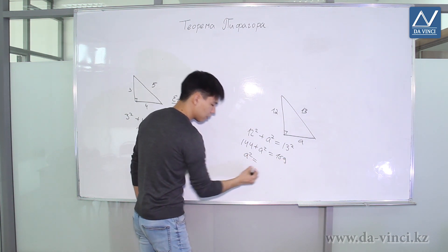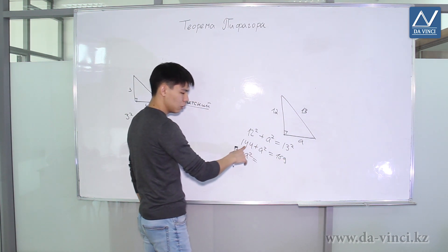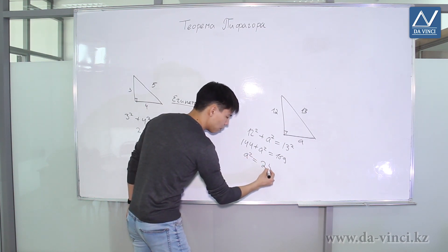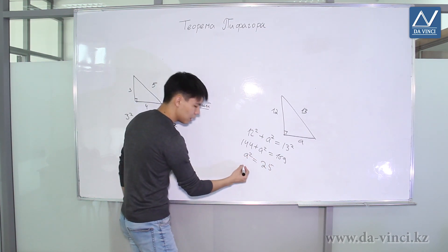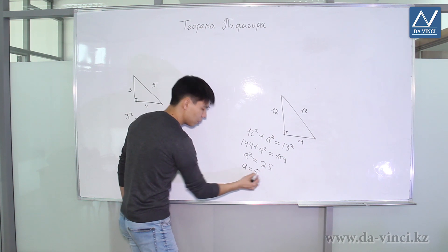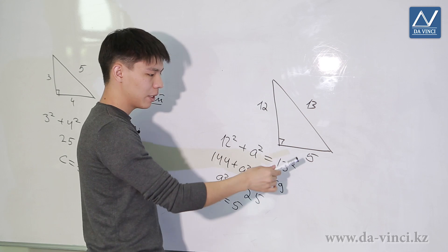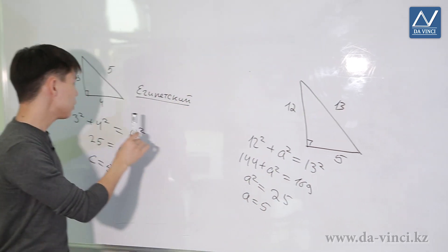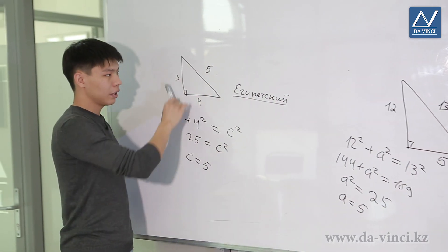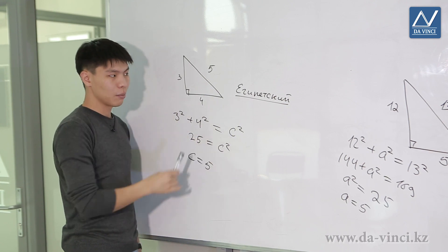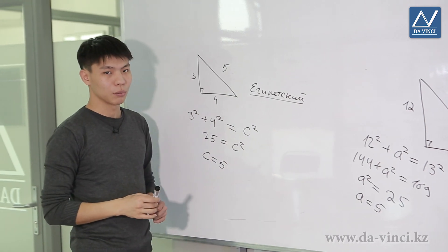And 13 squared is 169. So what is A squared? That would be 169 minus 144. We get 25. A squared equals 25. So A equals 5. Thus, the second leg is equal to 5. Note that sides here and here turned out to be integers. Such numbers that satisfy the Pythagorean theorem are called Pythagorean triples.